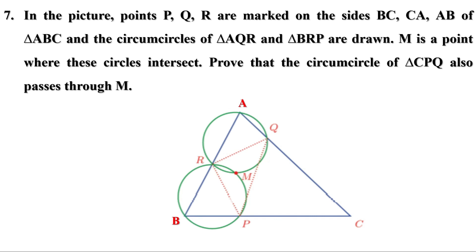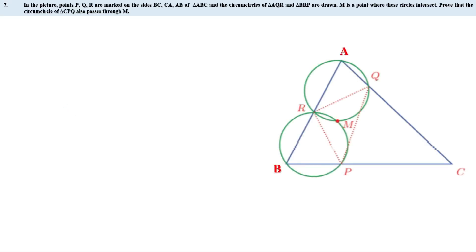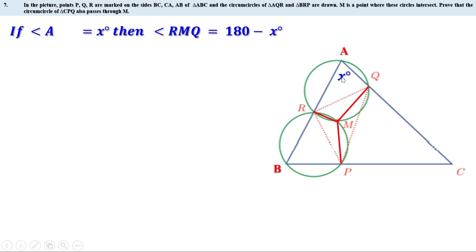Next problem: points P, Q, R are marked on sides BC, CA, AB of triangle ABC, and the circumcircles of triangles AQR and BRP are drawn. M is the point where these circles intersect. Prove that the circumcircle of triangle CPQ also passes through M. Let us join M to R, M to Q, and M to P. Quadrilateral ARMQ is cyclic; if angle A equals x°, then angle RMQ equals 180° − x°.